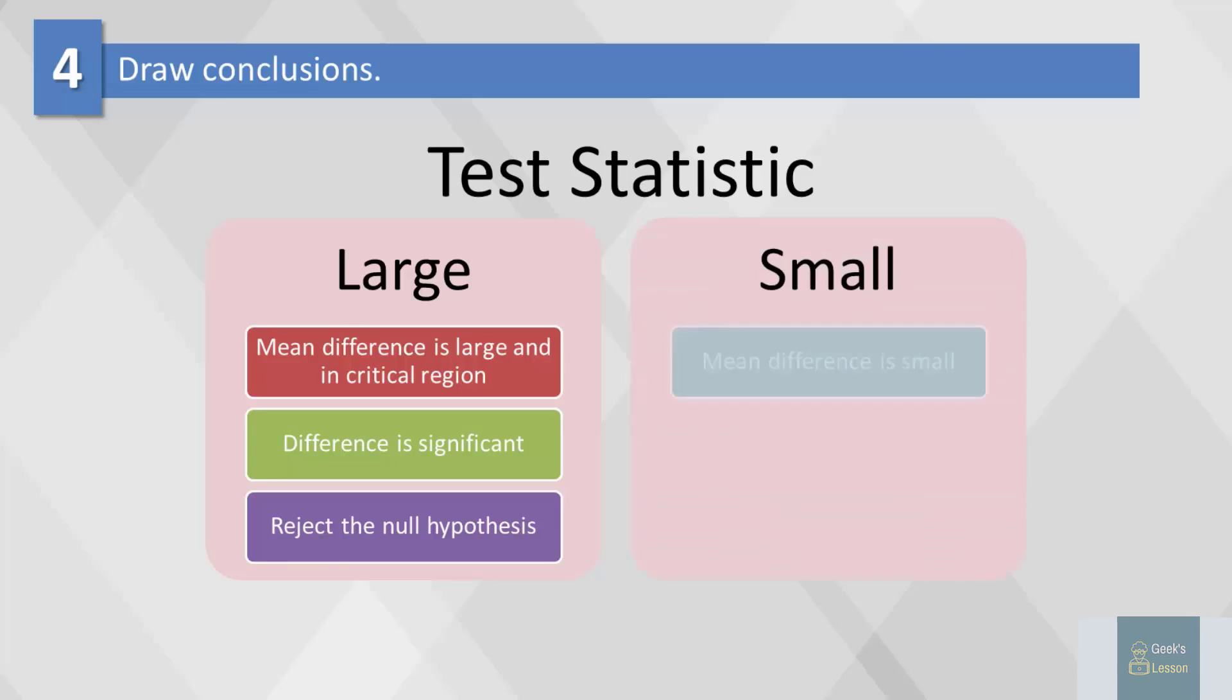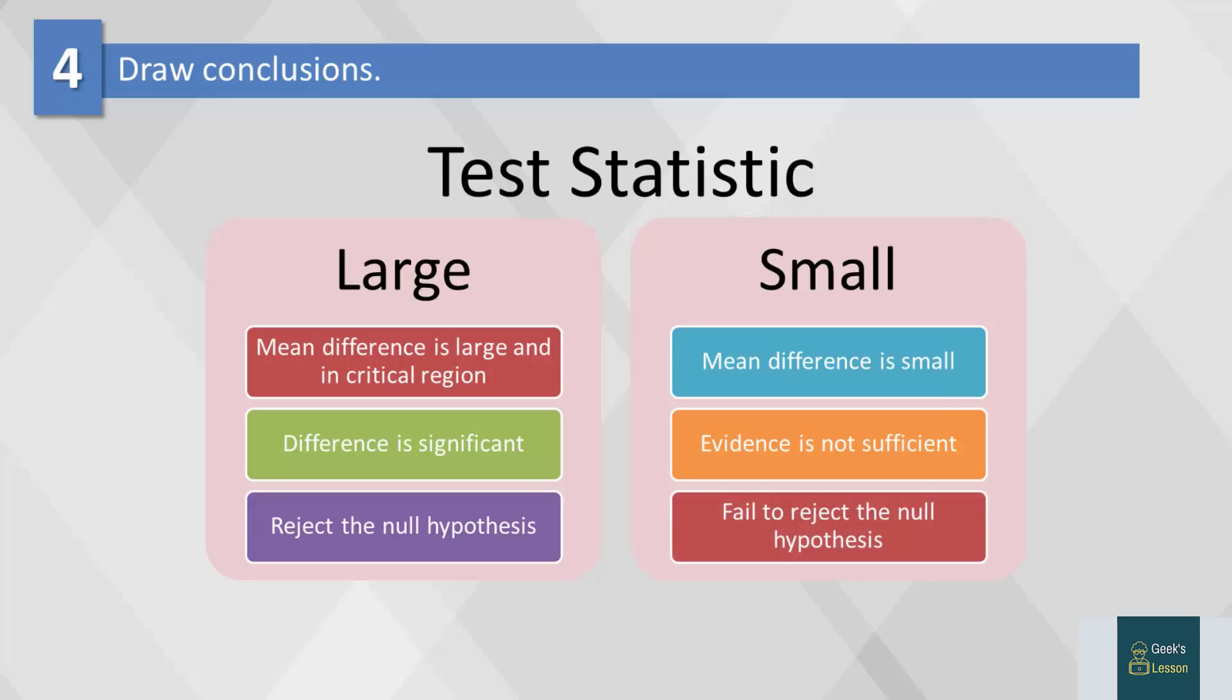If the mean difference is relatively small, then the test statistic will have a low value. In this case, we conclude that the evidence from the sample is not sufficient and the decision is to fail to reject the null hypothesis.